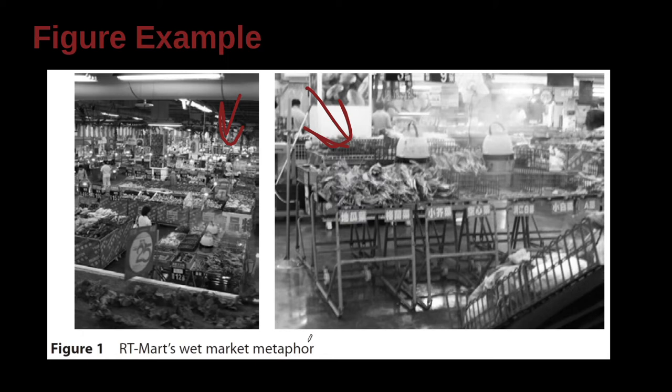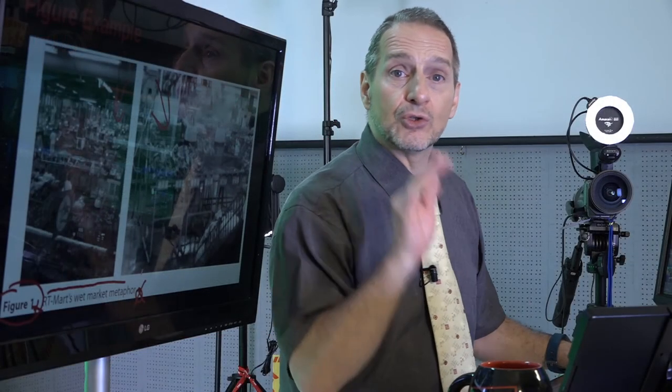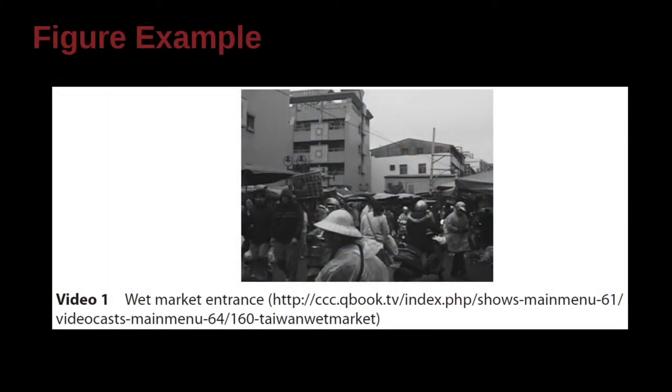Here's the figure one, RT Mart's wet market metaphor. This is an actual example from a journal I've published in, and you can see that in this journal, their rule is to say figure one with no period here. That's this journal's rule, and then to have the caption here with no period here also. You need to follow the rules of your journal that you're sending to or of your school or your department or your professor. It can be a little bit different for each one.